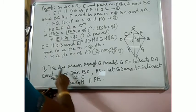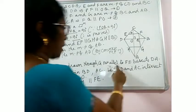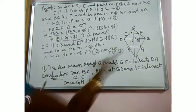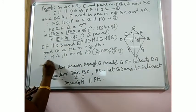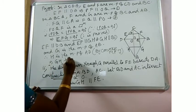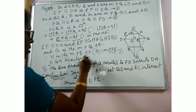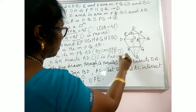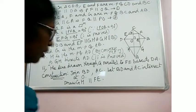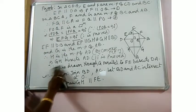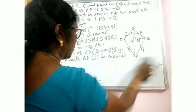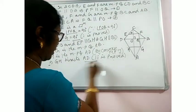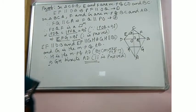That is what was required. The line drawn through G parallel to EF bisects DA. Hence GH bisects AD. With this, the second part is also proved. I hope this is clear to you — it is a little complicated but not at all difficult.